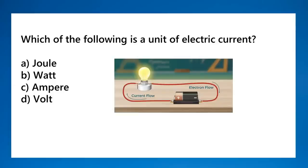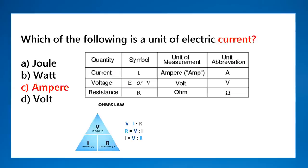Which of the following is a unit of electric current? That is the ampere. Memorize Ohm's law: Voltage equals current times resistance (V = IR). Current and resistance are inversely proportional — if resistance increases, current decreases, and vice versa.